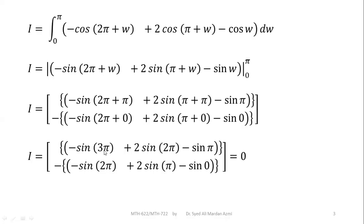Sin of 3pi means sin of 3 multiplied by 180. Sin of 2pi means sin of 2 multiplied by 180, and sin of pi means sin of 180. Remember, whenever pi operates as an angle, you will use its value as 180 degrees for the process of calculation, and whenever pi is available as a number, you will use its value as 22/7 or 3.14.